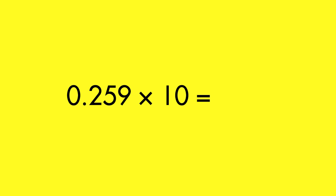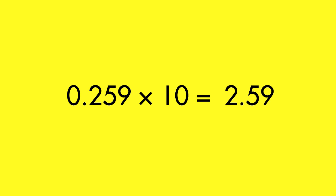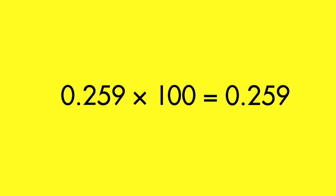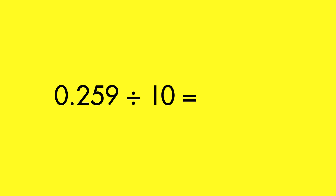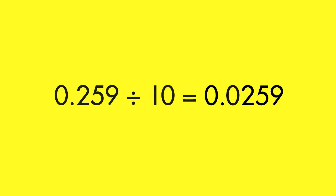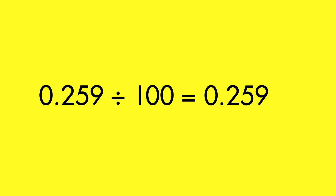When you multiply decimals by powers of ten, the decimal point moves to the right. When multiplying by ten, the decimal point moves one place. When multiplying by one hundred, the decimal point moves two places. When you divide decimals by powers of ten, the decimal point moves to the left. When you divide by ten, the decimal point moves one place. When you divide by one hundred, the decimal point moves two places.